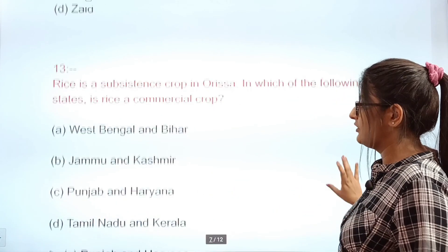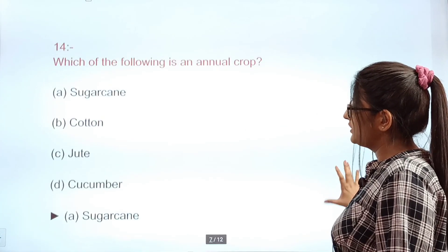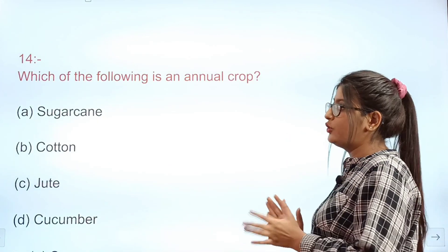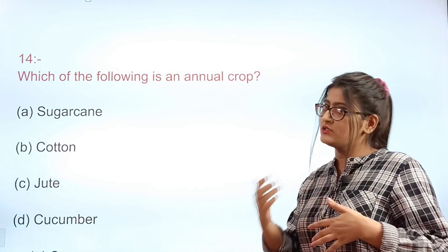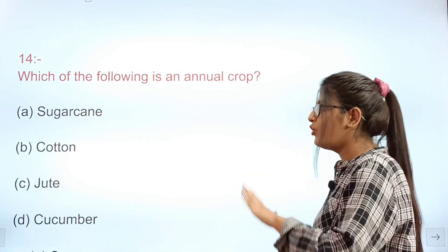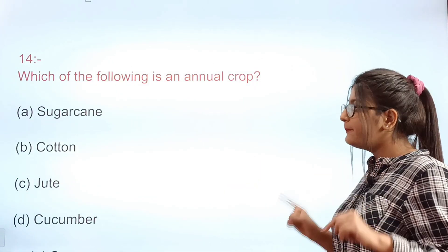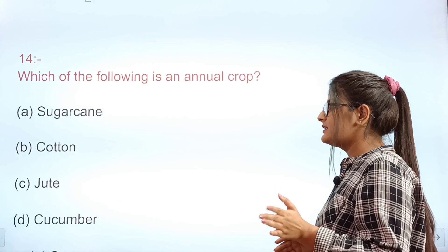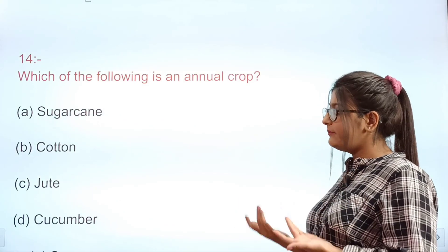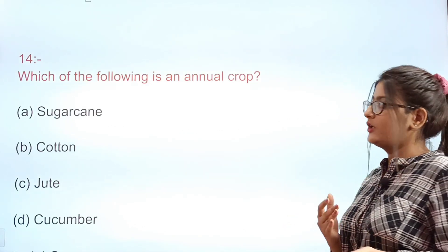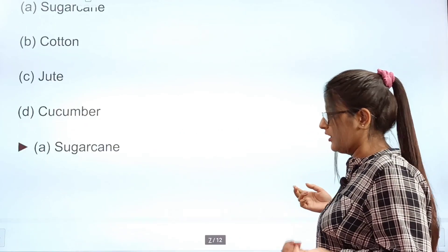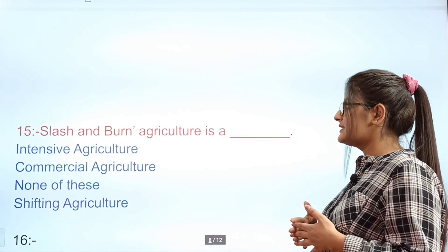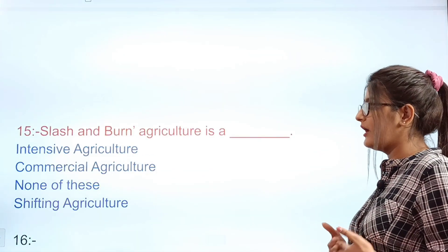Question 14: Which of the following is an annual crop? Options: A sugarcane, B cotton, C jute, D cucumber. The correct answer is A — sugarcane, which is an annual crop.